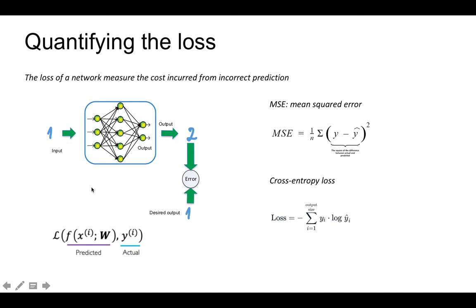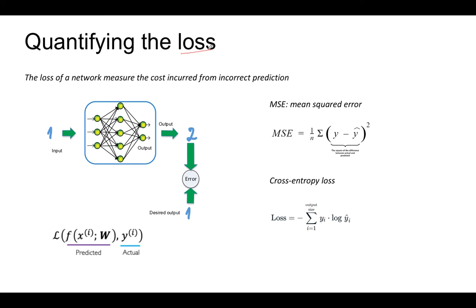Before diving into the training concept, we have to define the loss function, which is very widely used in most neural networks. The loss of a network measures the cost incurred from incorrect predictions — namely, it measures the difference between the prediction and the target. We expect the loss to always be zero, or as small as possible, because the loss represents the accuracy of the network.